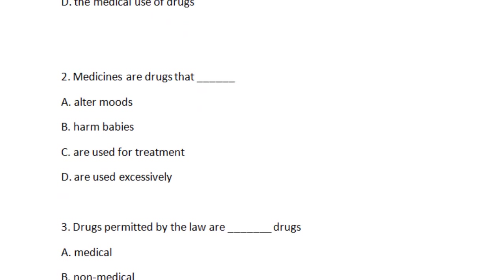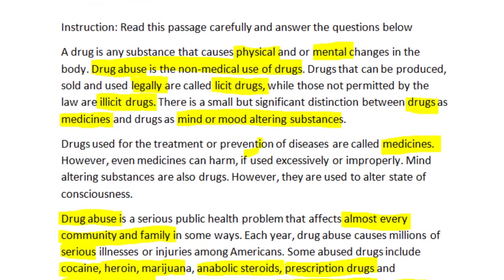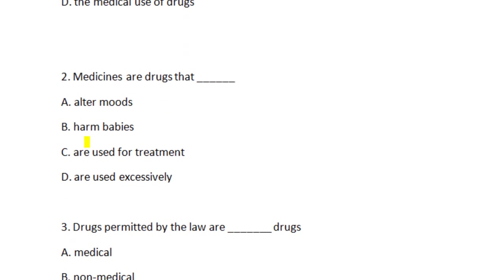Question two: Medicines are drugs that — A) alter moods, B) harm babies, C) are used for treatment, D) are used excessively. Let's go back to the passage: drugs used for the treatment or prevention of diseases are called medicines. So medicines are drugs used for treatment and prevention of diseases. The answer is C — are used for treatment — because the passage tells us medicines are used for treatment and prevention of diseases.